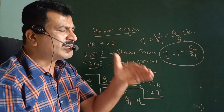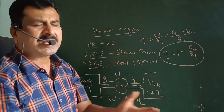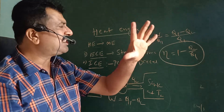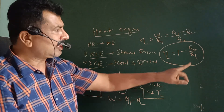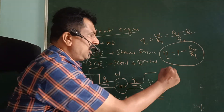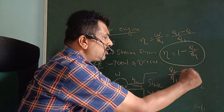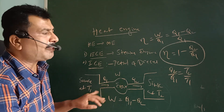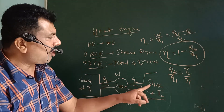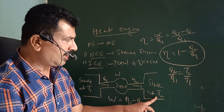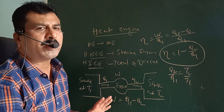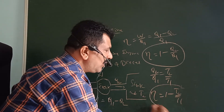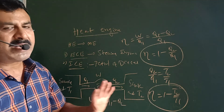When less amount of heat Q2 is rejected to the sink and a large amount of heat Q1 is absorbed from the source, the efficiency of the engine becomes high. Since Q2 divided by Q1 equals T2 divided by T1, the efficiency eta is also equal to 1 minus T2 upon T1. This is the equation for efficiency in terms of temperature.